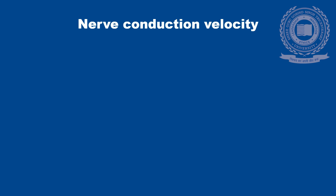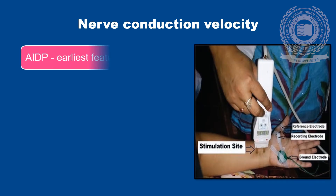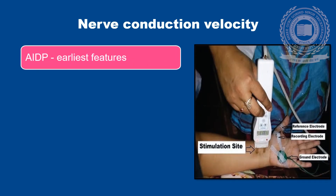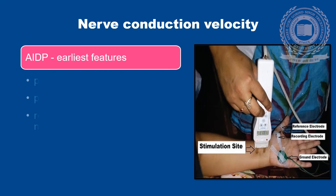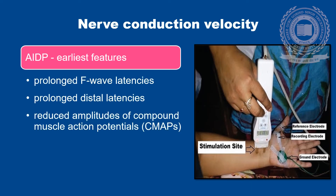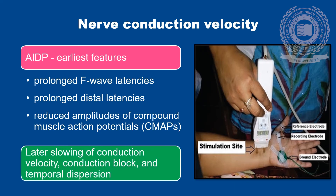Nerve conduction velocity examination of the affected nerves also plays a very important role in diagnosing the patients. The electrodiagnostic features are mild or absent in the early stages and lag behind the clinical evolution. In acute inflammatory demyelinating polyneuropathy, which is the most common type of Gulenbady Syndrome, the earliest features are prolonged F wave latencies, prolonged distal latencies, and reduced amplitude of compound muscle action potentials. Later, slowing of conduction velocity, conduction block, and temporal dispersion may be appreciated.